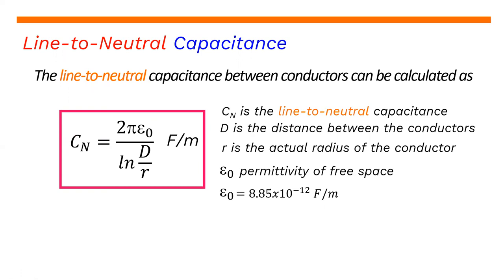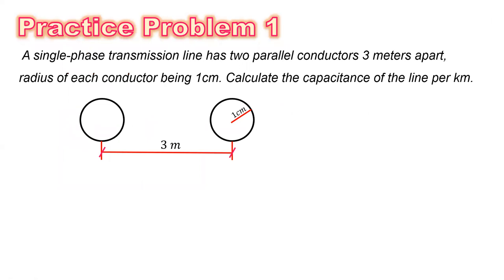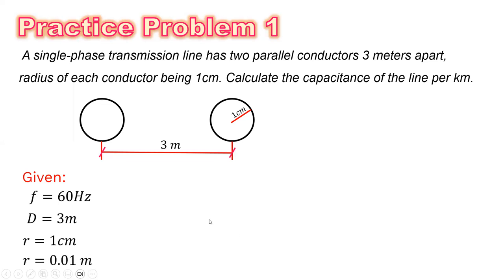Practice problem number one: a single-phase transmission line has two parallel conductors three meters apart, with a conductor radius of one centimeter. Calculate the capacitance of the line per kilometer. The given values are: distance d equals 3 meters, and radius r equals 1 centimeter, which converts to 0.01 meters.